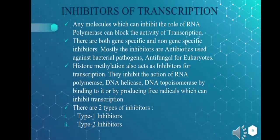Now we'll look into the topic of inhibitors of transcription. An inhibitor is any molecule which can inhibit the role of RNA polymerase and block the activity of transcription. There are both gene-specific and non-gene-specific inhibitors. Most inhibitors are antibiotics used against bacterial pathogens, or antifungals for eukaryotes. DNA methylation also acts as an inhibitor for transcription, inhibiting RNA polymerase, DNA helicase, or DNA topoisomerase by binding or producing free radicals.